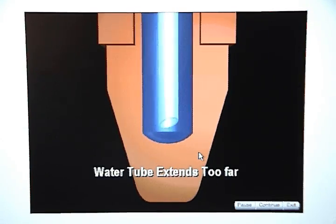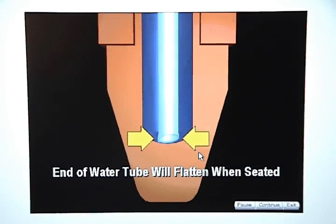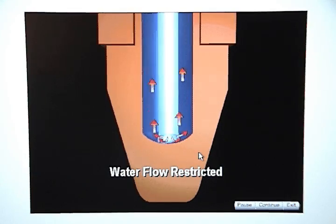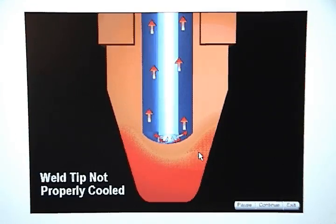If the water tube extends too far, the end of the water tube will flatten against the weld tip when it is seated. This will restrict water flow, and the weld tip will not be properly cooled.